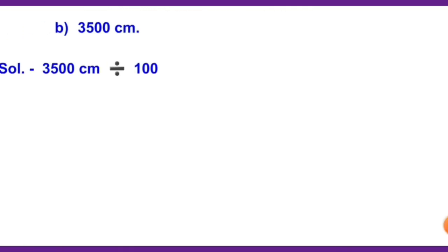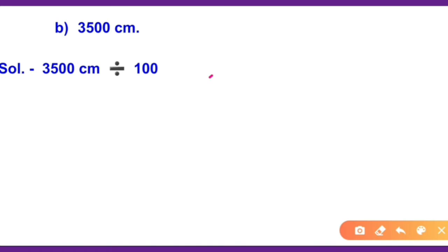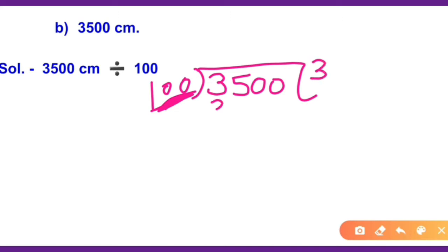This is question number 2. In 3,500 centimeters, how many meters and centimeters are there? So we know the relation between meters and centimeters. We will divide 3,500 by 100. Your divisor is a 3-digit number. In 100, there are 3 digits. So we will divide the dividend by 3 digits. 100 times 3 is 300.